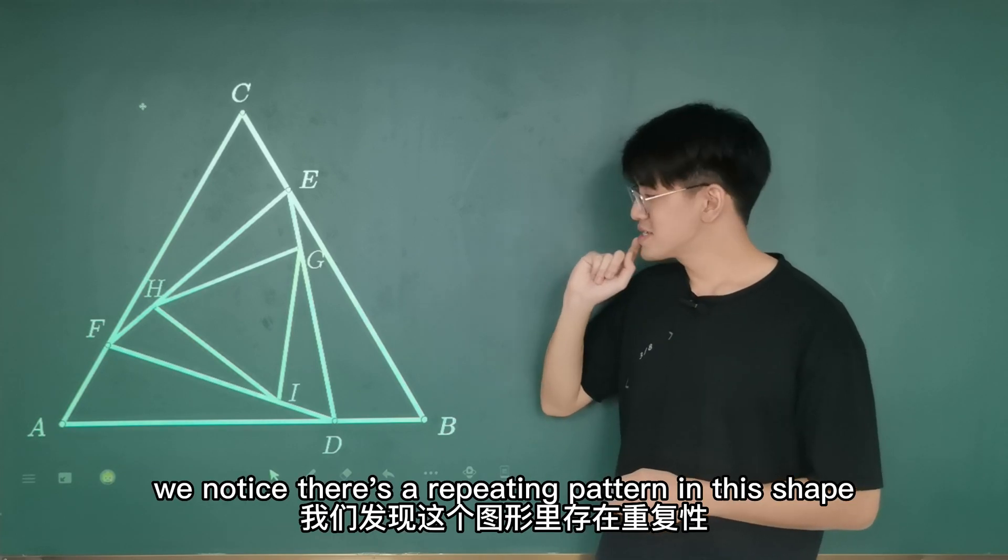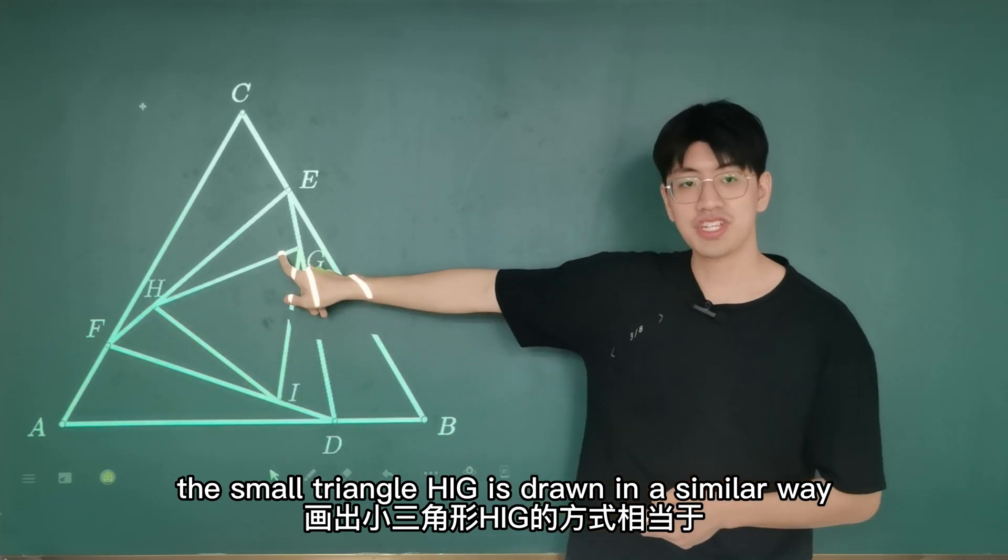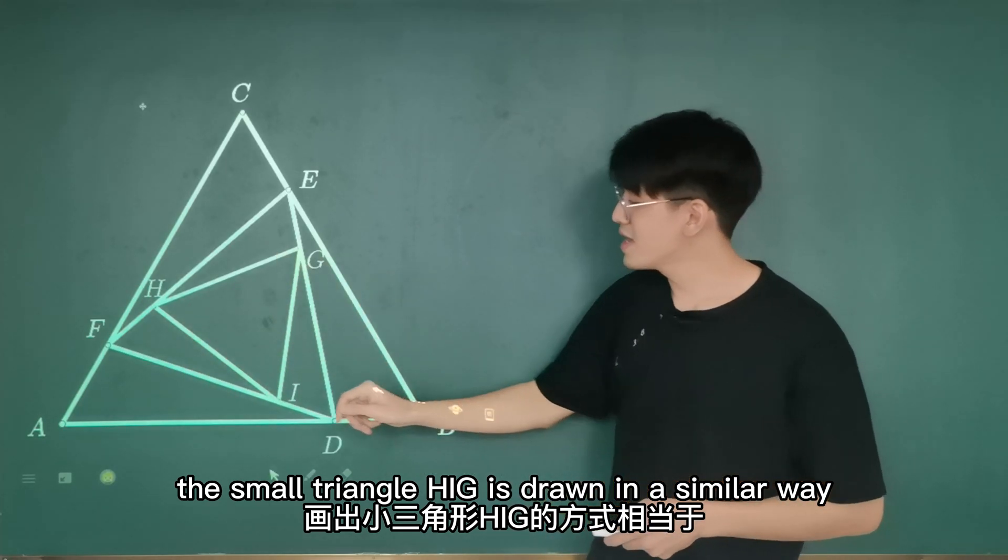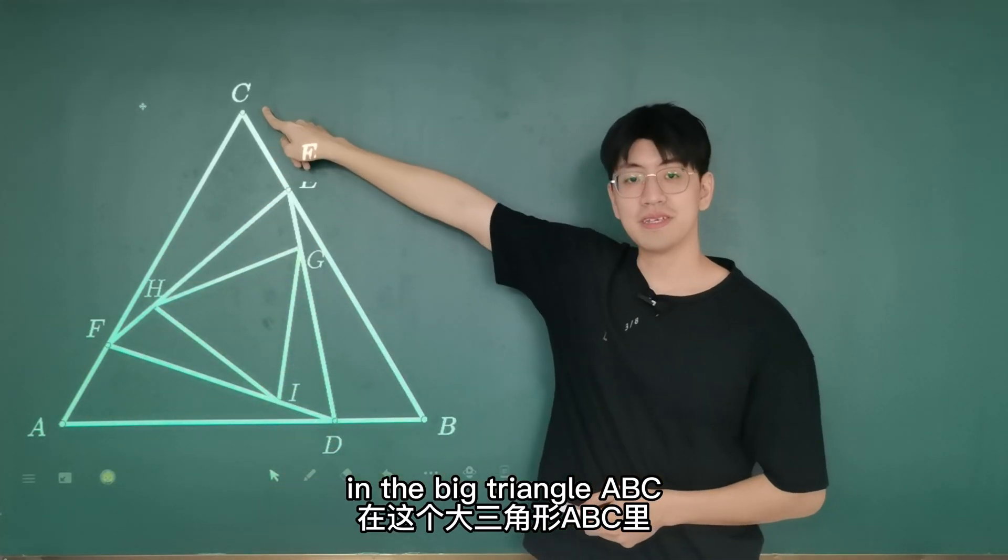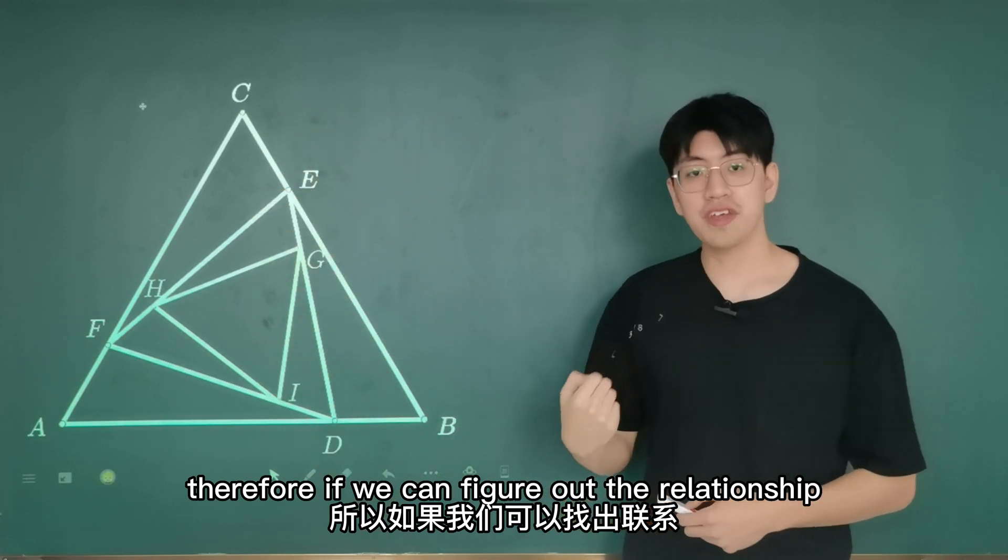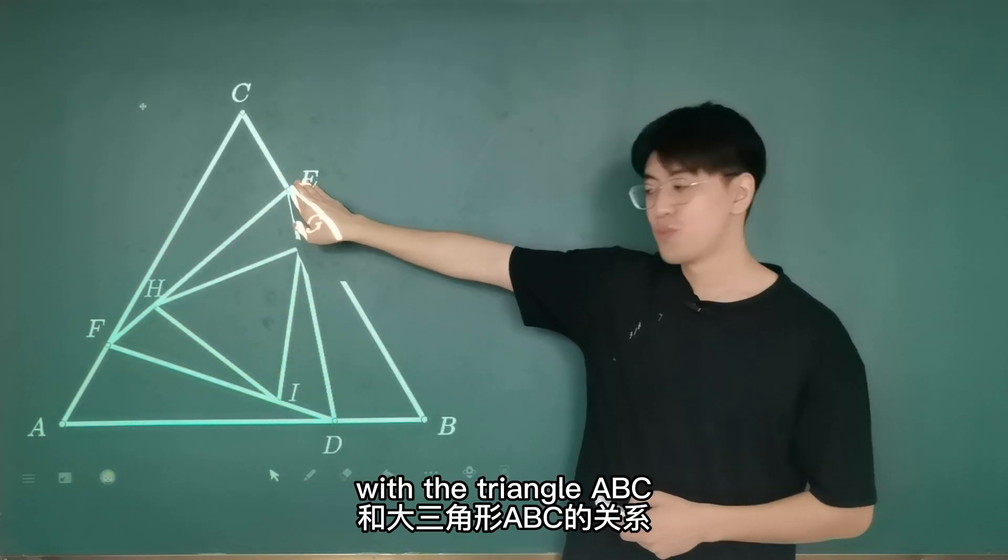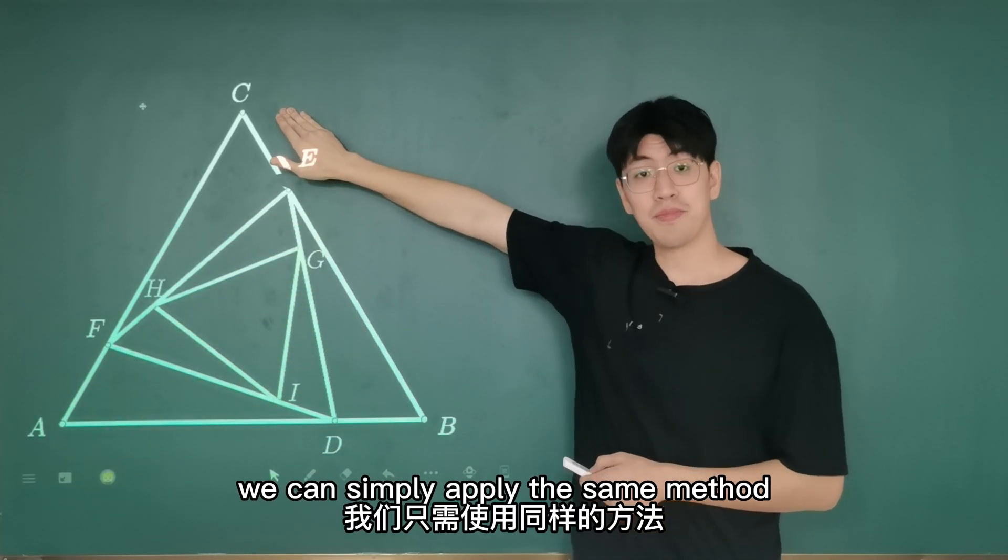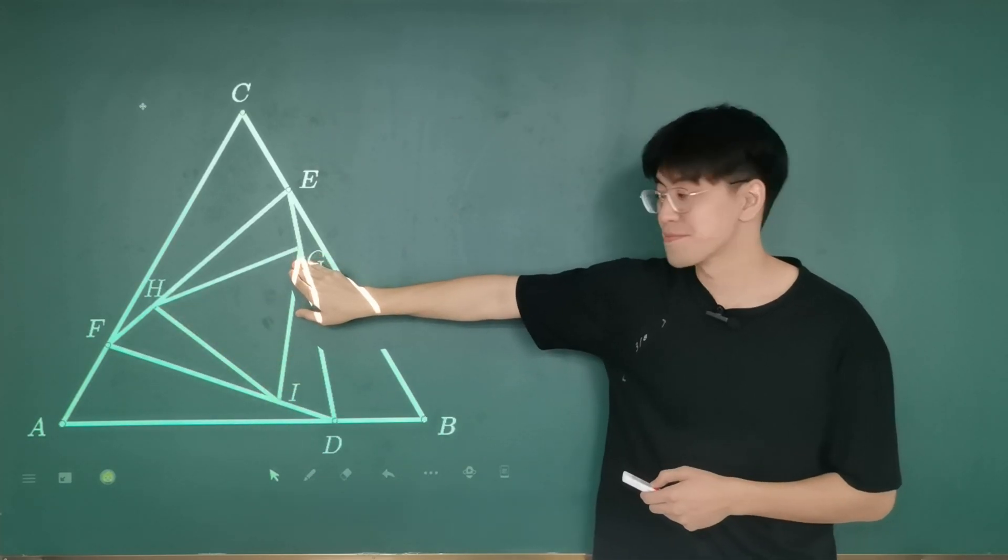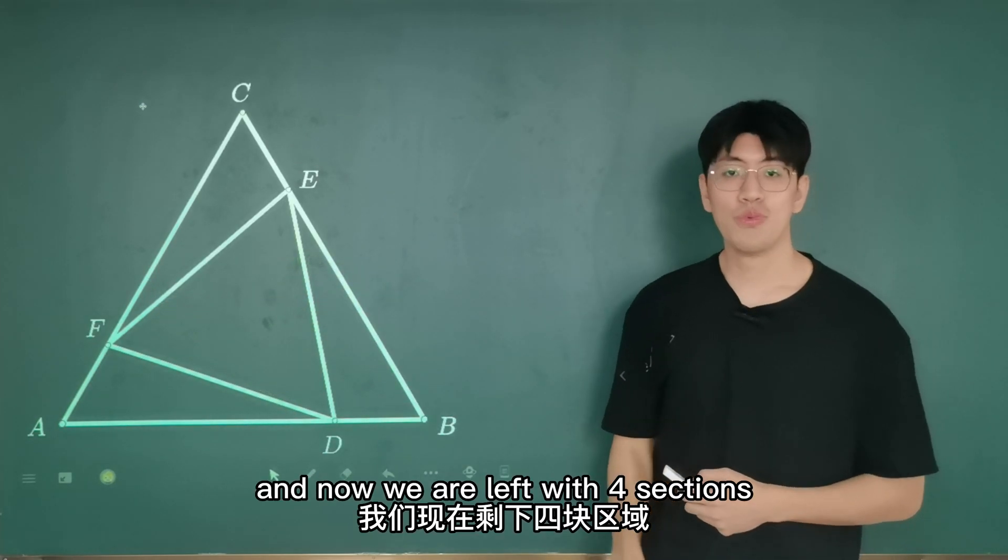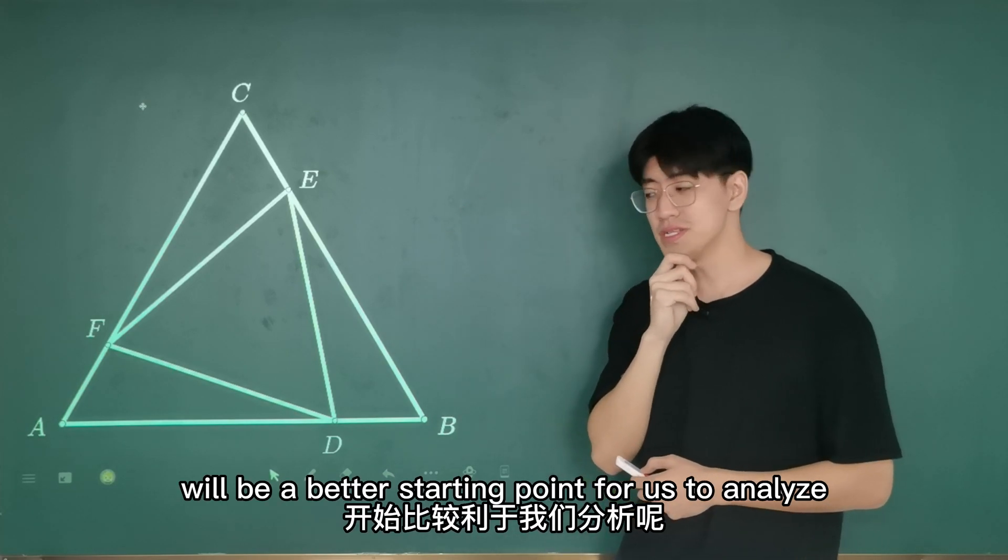First of all, we notice there's a repeating pattern in this shape. The small triangle HIG is drawn in a similar way as the middle triangle FDE is drawn in the big triangle ABC. Therefore, if we can figure out the relationship between the middle triangle FDE with triangle ABC, we can simply apply the same method again to study the small triangle HIG. And now we're left with four sections.